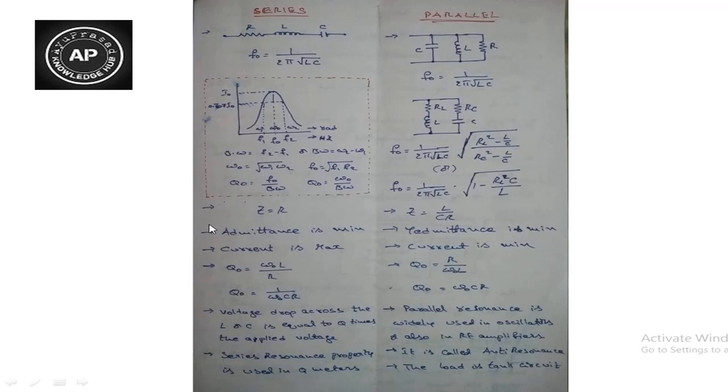At resonance, the impedance offered by the series circuit Z is equal to R. At resonance, the impedance is very minimum. Since impedance is minimum, the current is maximum. When impedance equals resistance R, maximum current flows through the circuit.